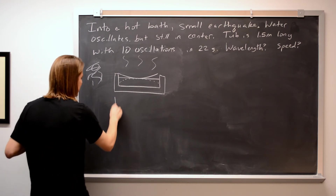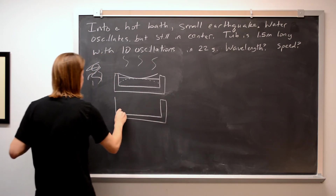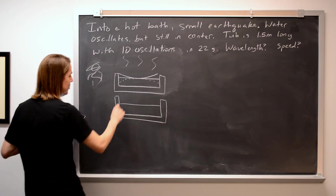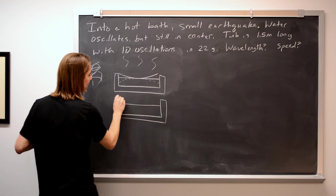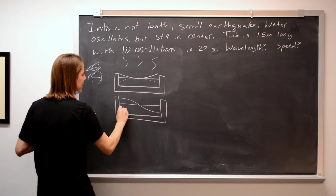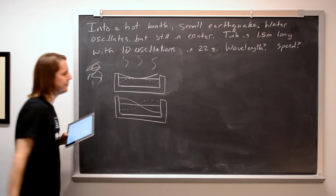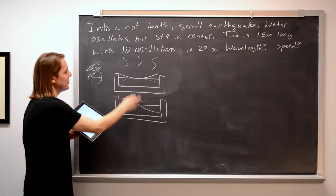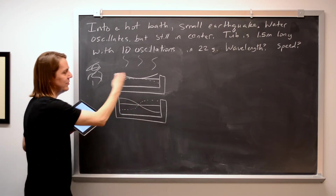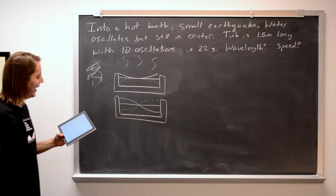So the water would actually move like this — if this is the natural flat position of the water, it would be high on one side and low on the other side, and then a half cycle later, it would do the opposite. In the end, you don't actually need intuition for how water moves in an earthquake to get this problem right. Mathematically, these give the same answer.